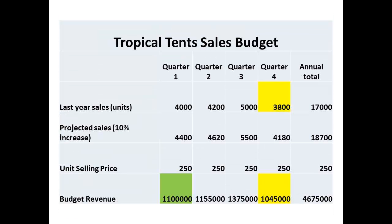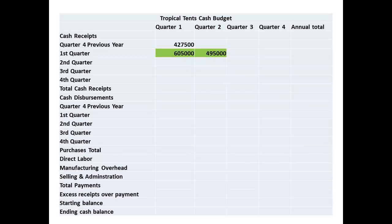The next figure is the sales revenue for the first quarter. The total expected revenue for this quarter is $1,100,000. This total needs to be split: we place 55% of the total, which is $605,000, into quarter 1, and the remainder of $495,000 into quarter 2.